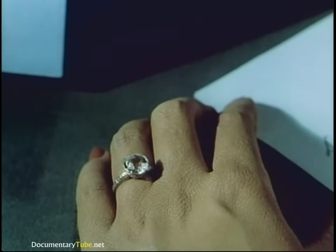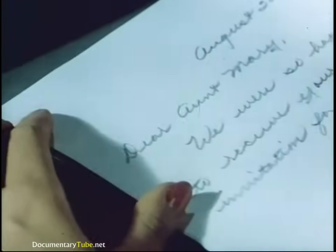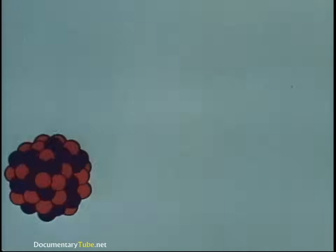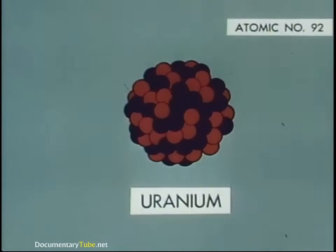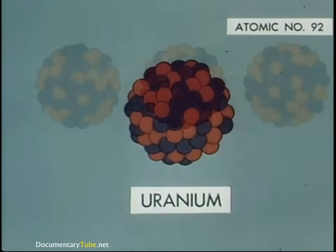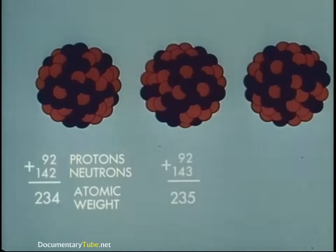Carbon exists in many forms, high and humble, as diamonds and pencil points. At the top of nature's ladder is the most complex atom, uranium, with an atomic number of 92. Naturally occurring uranium has three isotopic forms, with atomic weights of 234, 235, and 238.